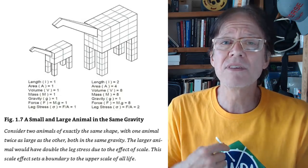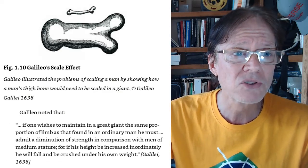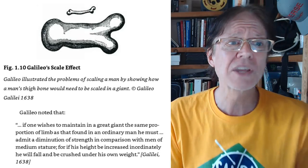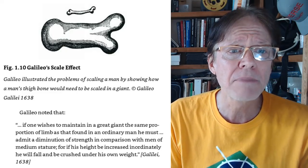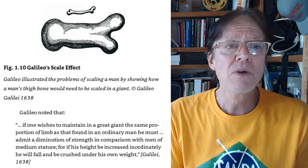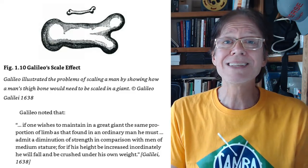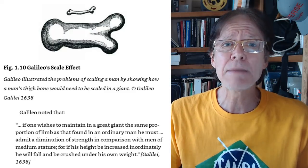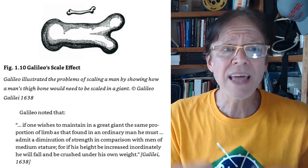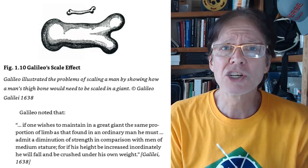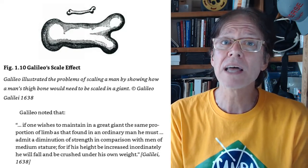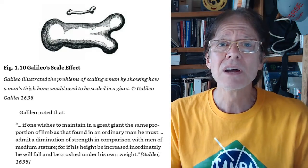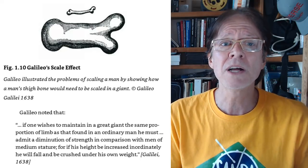So what he's saying is there is a limit that gravity puts on animals. And for dinosaurs to live today, what happens? Well, this is a problem, and this was recognized by Galileo. Galileo's scale effect. Galileo illustrated the problem of scaling a man by showing how a man's thigh bone would need to be scaled into a giant. You notice it's not just bigger one, it just doesn't look the same. It's humongous. It's had to get thicker. If you take that one and shrink it down, it'll look like a gigantic fatter bone, littler bone. Well, why is that? It's made of material. Material has stresses. Materials can't simply be scaled linearly. That is twice as big, just twice as much. No.